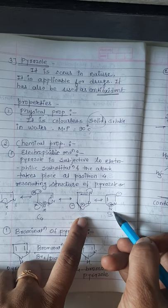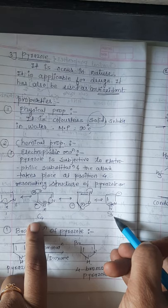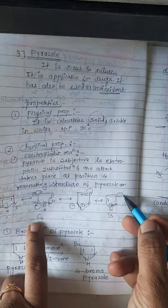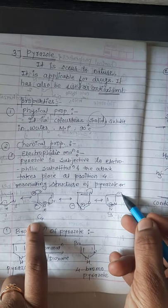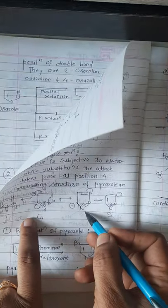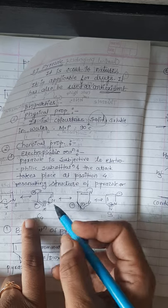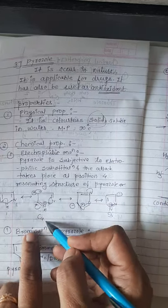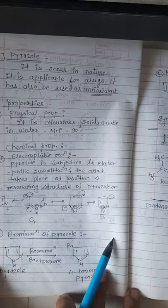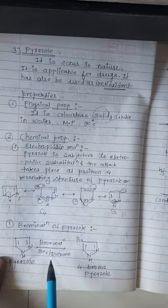This is the resonating structure of pyrazole at the C4 and C3 positions. This is the resonating structure of pyrazole having the C4 position, and this represents the electrophilic substitution reaction.